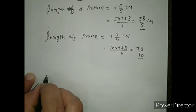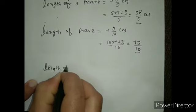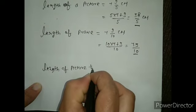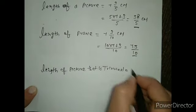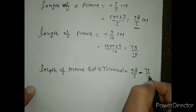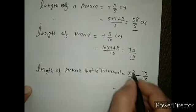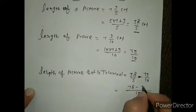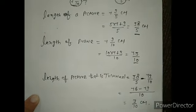To find the amount trimmed: 38/5 minus 73/10. Taking LCM of 5 and 10, which is 10. Divide 10 by 5 to get 2, multiply 2 by 38 to get 76. Divide 10 by 10 to get 1, multiply 1 by 73 to get 73. So 76/10 minus 73/10 equals 3/10 cm. This is the answer for question number 6.